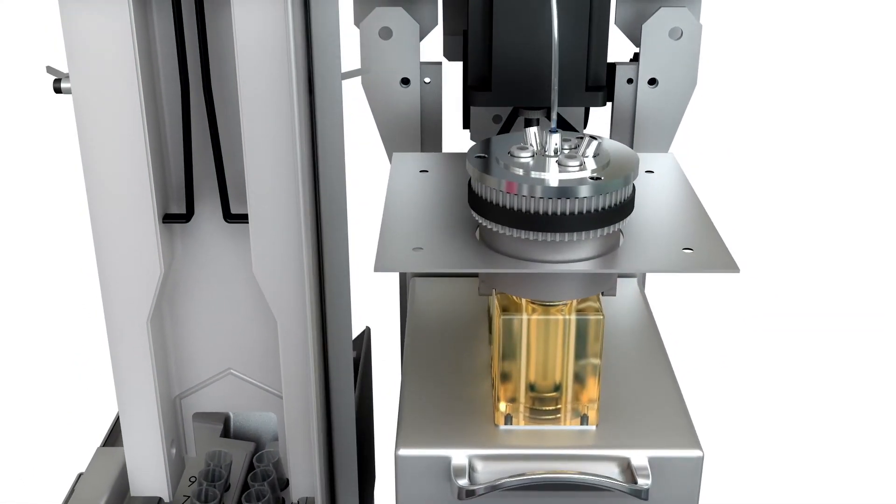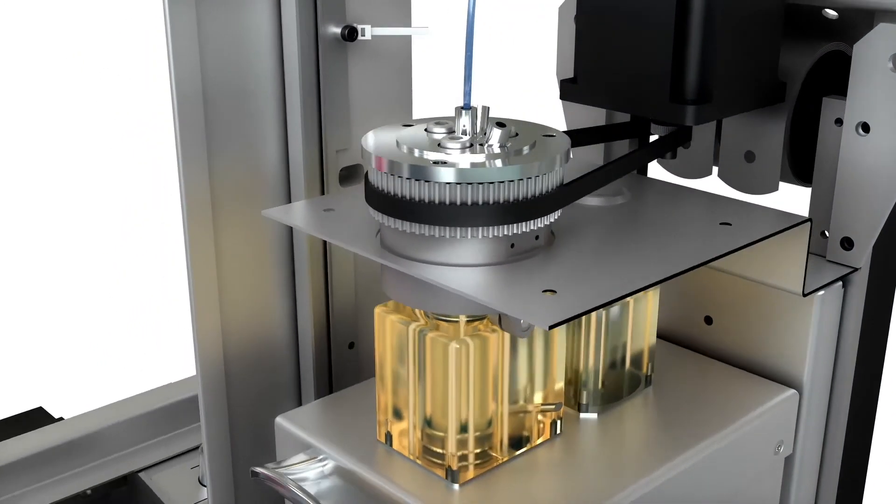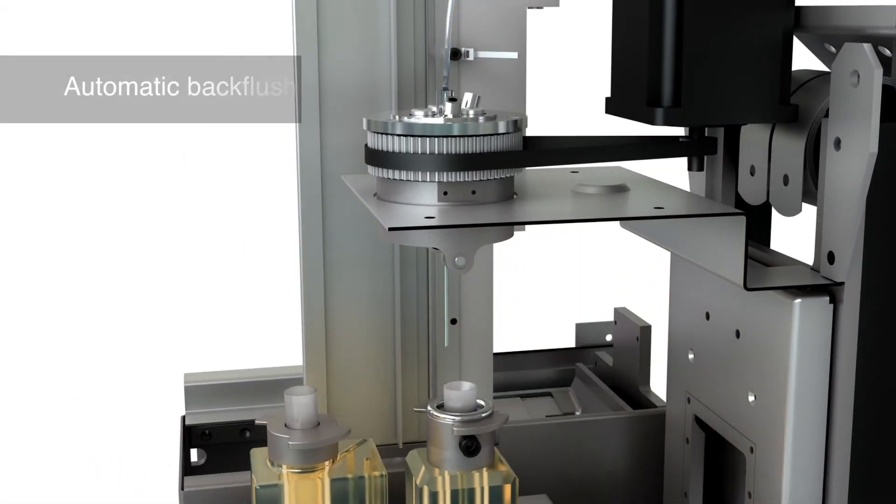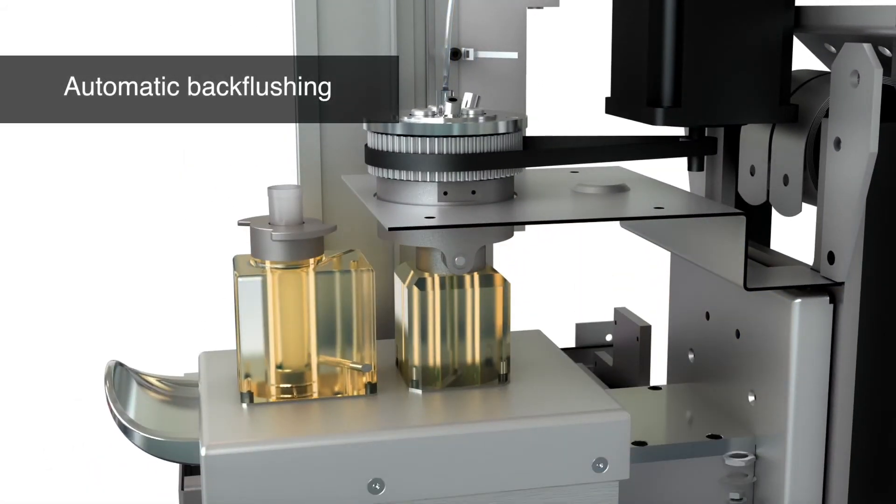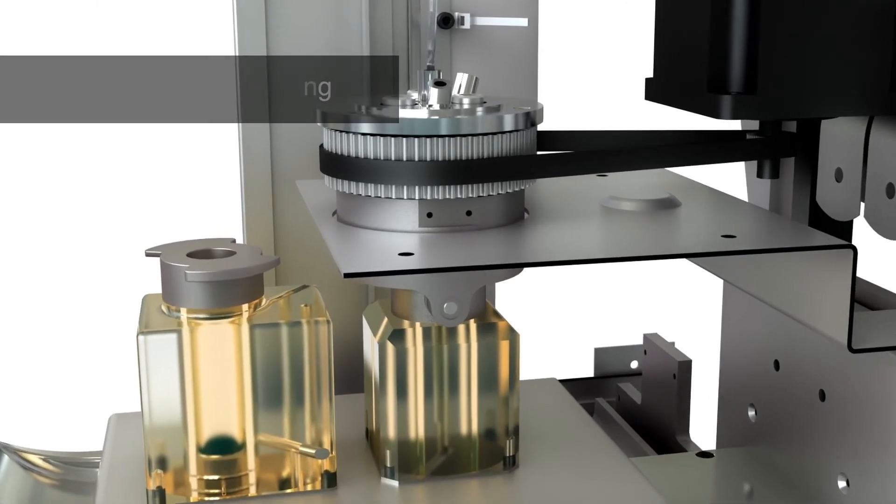The loading stage includes a washing station, where the sample line is cleaned inside and out between runs. Automatic back-flushing of the sample line in the washing station minimizes the risk of cross-contamination.